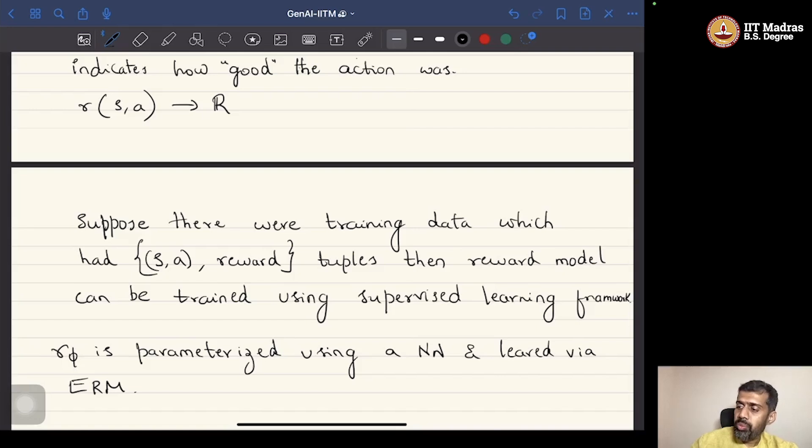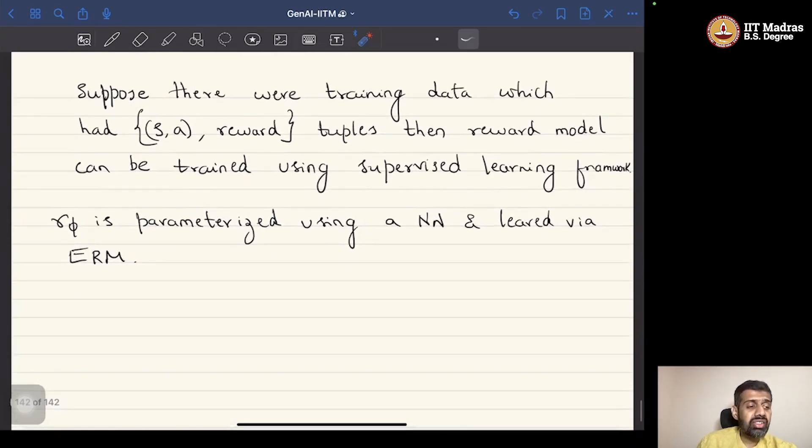But the problem is obtaining this sort of data that has the state actions and the corresponding reward is often not possible, especially in the cases where large sizes of data sets are involved. So, however, obtaining such annotated data is not easy.